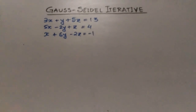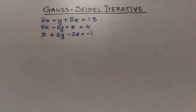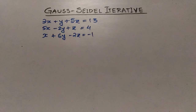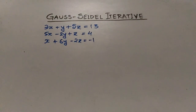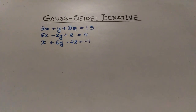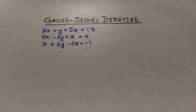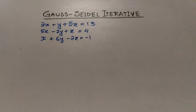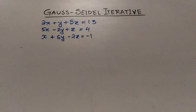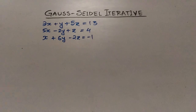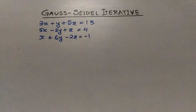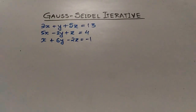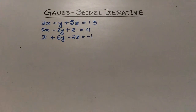Hello everyone, today I am going to discuss the most difficult method to solve simultaneous linear equations — the only iterative method, the Gauss-Seidel iterative method, which is generally included in most university and college syllabuses. To grasp the concept, we need to look at an example.